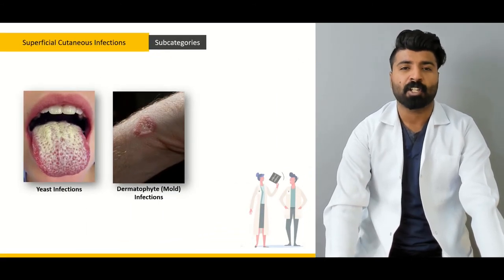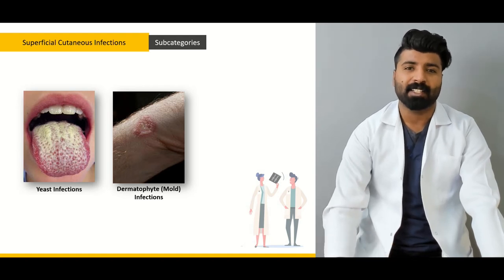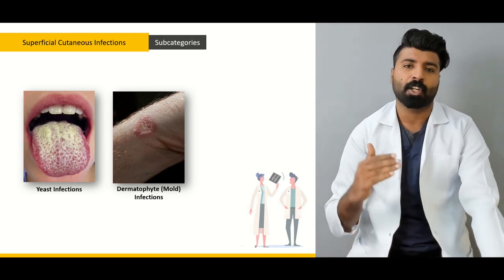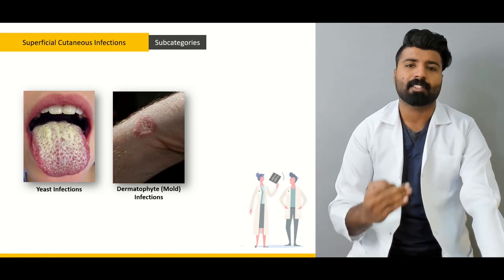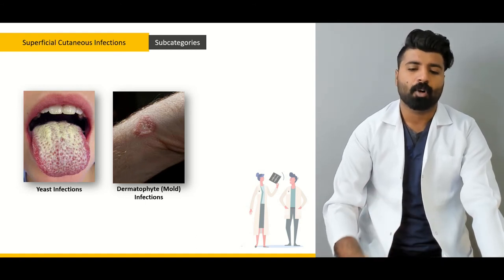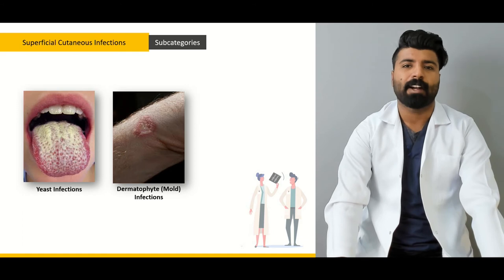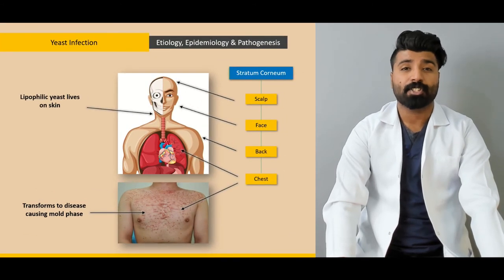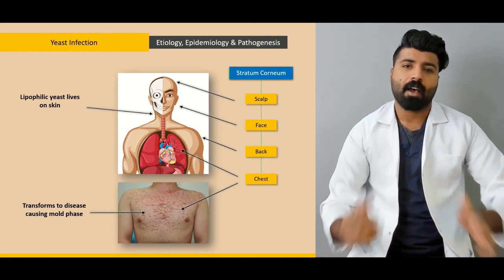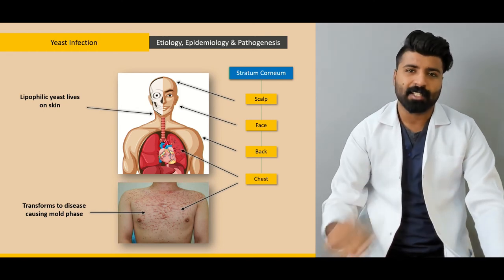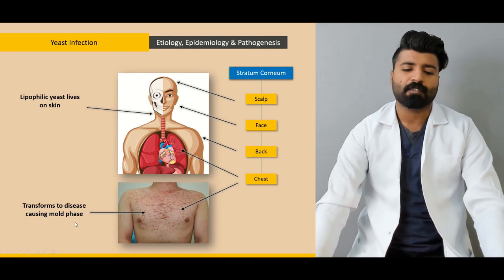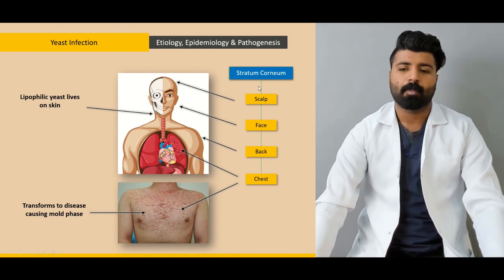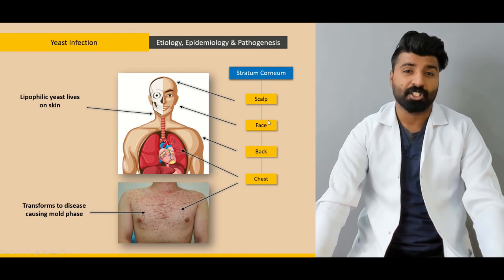Next, we're going to talk about superficial cutaneous lesions — what they are, why they're called superficial cutaneous lesions, and what layer of the skin is involved. We're going to talk about yeast infection and dermatophyte infection, what kind of yeast affects the superficial cutaneous lesions, how it transforms to a mold state, and which part of the body is more prone to getting this yeast infection.